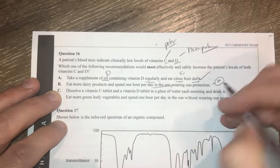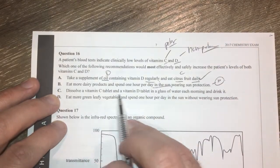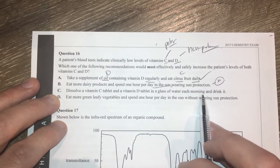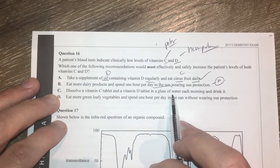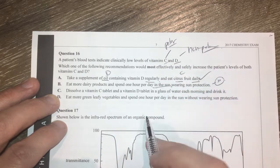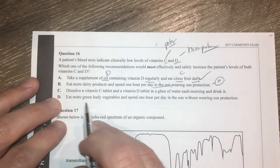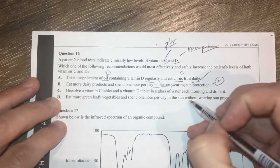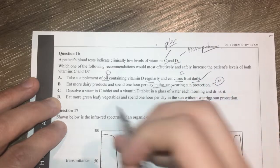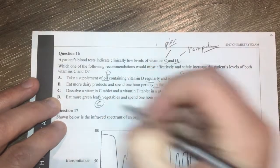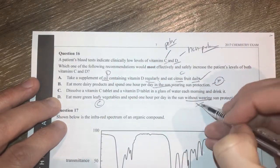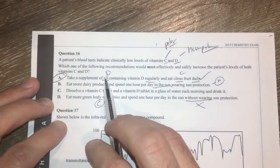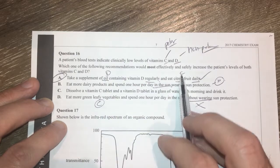Dissolve vitamin C and D in a glass of water and drink it each morning. Don't need to do that. First of all, vitamin D being non-polar, not going to dissolve either. Eat more green leafy vegetables and spend one hour a day without sun protection. Without sun protection is certainly not safe. Green leaf vegetables are going to give you your C. The sun does give you D but without sun protection, not very good. A is the best option there. Oil for your D, citrus fruit for your C.